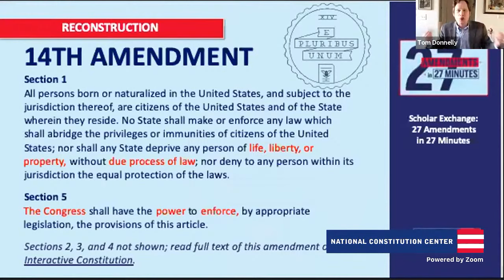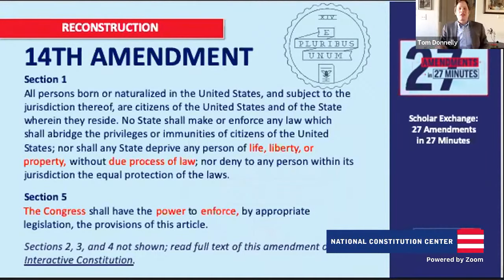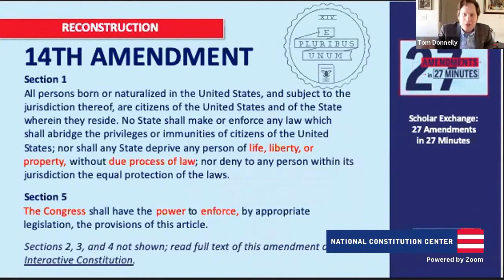The 14th Amendment does many things. It makes everyone born on American soil a U.S. citizen — speaking back to the Supreme Court's Dred Scott decision. It writes the Declaration of Independence's promise of equality into the Constitution: equal protection of the laws for all persons. The Constitution was silent on equality before the 14th Amendment. It also extends Bill of Rights protections to the states — critical because states like Southern states were banning abolitionist speech, preventing assembly in religious gatherings, and prohibiting enslaved people from learning to read.